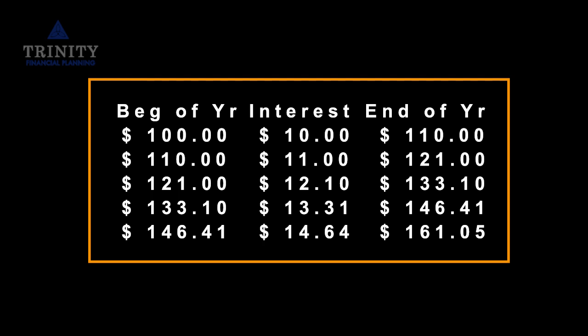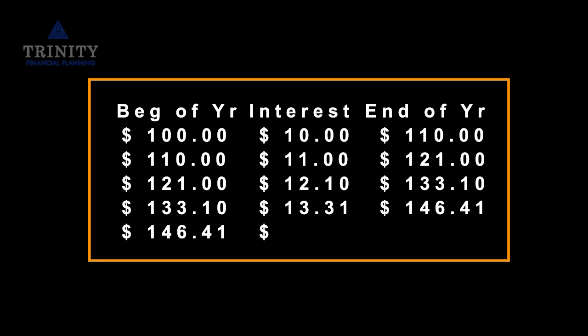Taking it one step further — that compounding now, you have $121. 10% of that, at the end of three years, where you'd think with simple interest — 10%, $10, $10, $10 — we should have $130. We've actually got over $133. And that's compound interest as opposed to simple interest.